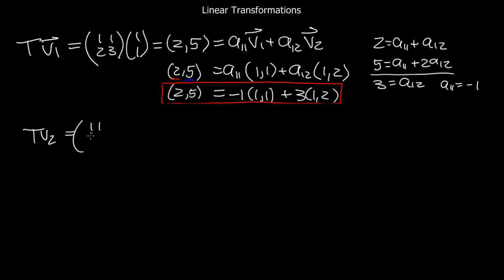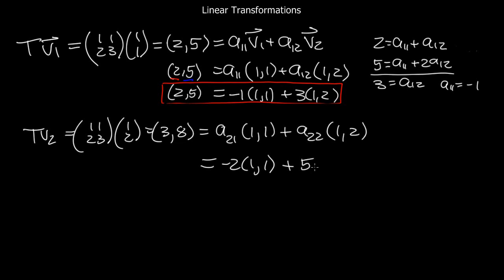So that's half of the calculation you need to do to answer this question. You also have to calculate T of V2. By definition, T of V2 is this matrix calculation, multiplication, which gives you (3,8). And again, you need to write this as a linear combination of the basis vectors (1,1) and (1,2). And I'll leave it to you to check that what you get is minus 2 times (1,1) plus 5 times (1,2).